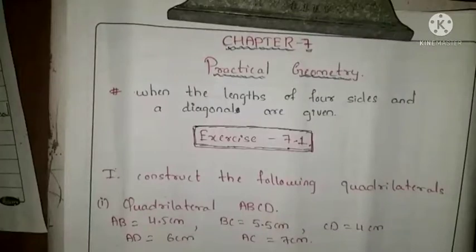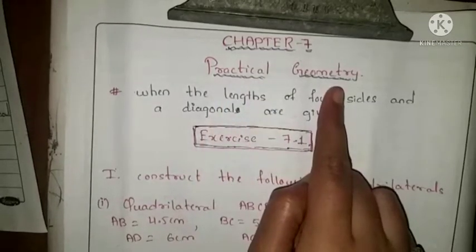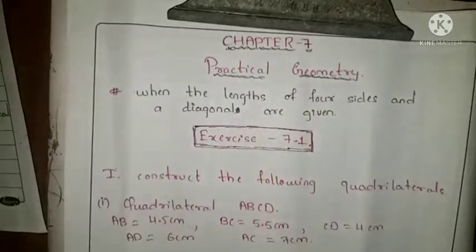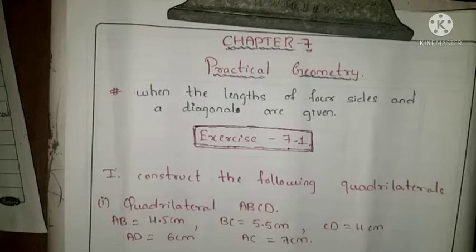Hello everyone. Now I am going to discuss a new chapter. The chapter name is Practical Geometry. The meaning of practical geometry is construction. In this chapter we are going to do the construction on quadrilaterals. We already discussed the concept of quadrilateral in chapter 4, that is Understanding Quadrilaterals.